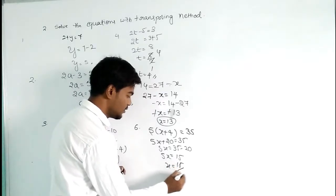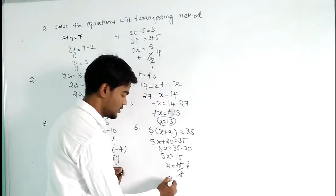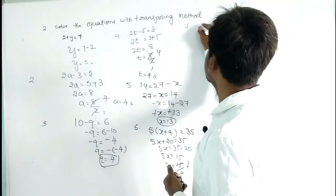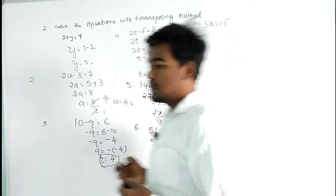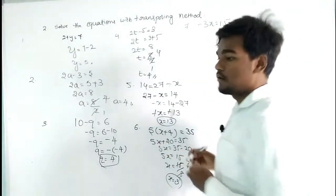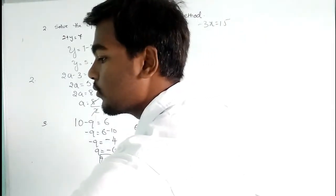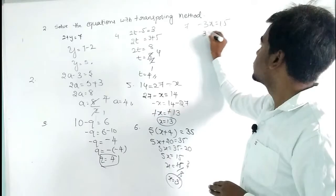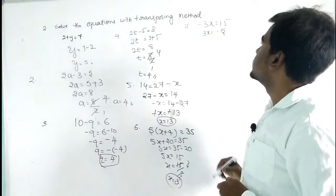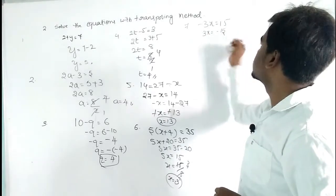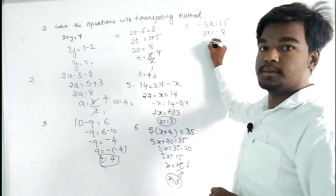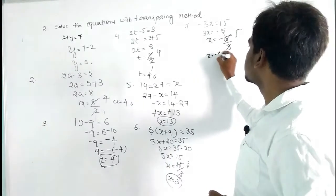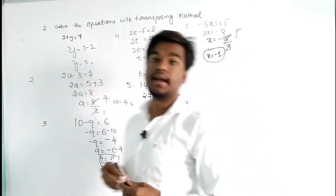So 5x = 15, therefore x = 15 ÷ 5, which gives x = 3. Our seventh question is -3x = 15. Transposing minus 3 to the right side, it becomes division, so 3x = -15 and x = -15 ÷ 3, giving x = -5.